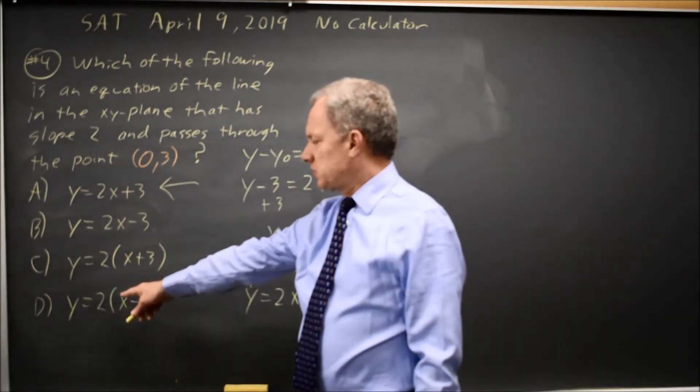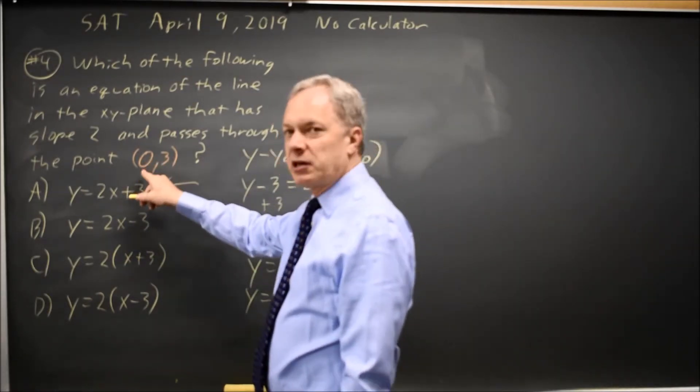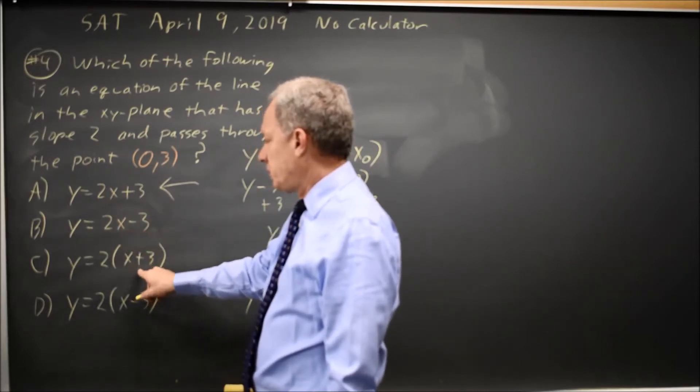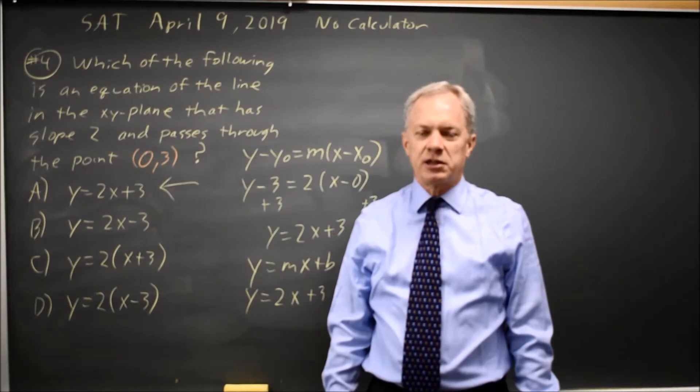Or third, all four choices have slope 2. If you substitute in x equals 0, you should get a y value of 3. The y value here is 3, negative 3, 6, negative 6. Only choice A has the correct y-intercept.